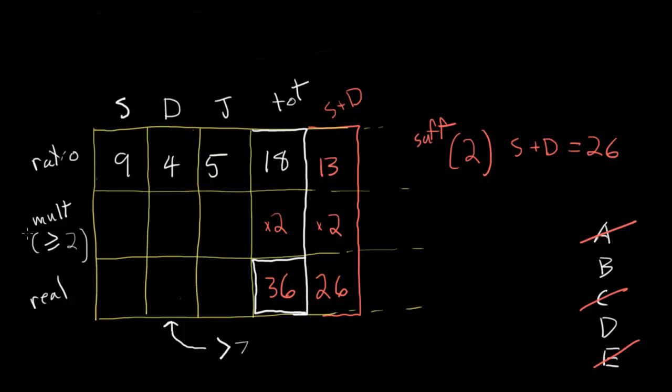On to statement 1. And before we look at it, I'll just get rid of the info from statement number 2, because we're looking at 1 on its own. The total number of shirts and jackets in the closet is less than 30. So shirts plus jackets is less than 30.